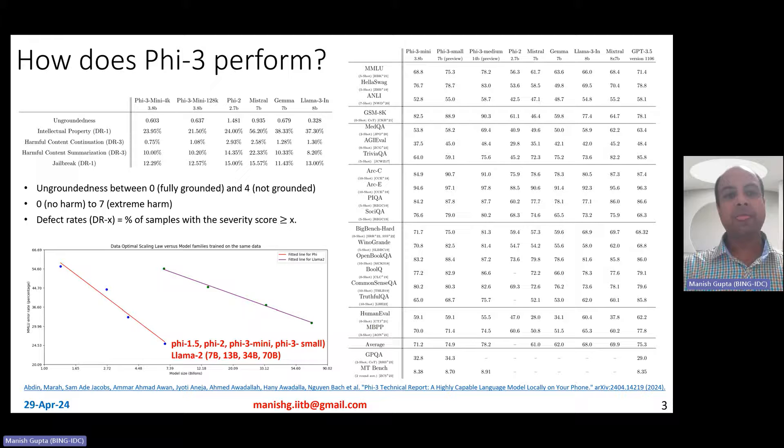So next let me talk about how does it perform. On the right side, what you see is performance reported for several models on academic benchmarks. For example, we have performance for Phi-3 mini, Phi-3 small, Phi-3 medium, and Phi-2. And then you also have performance for Mixtral, Gemma, Llama 3, which is very recently launched, Llama 3 Instruct model, Mixtral, and GPT-3.5.